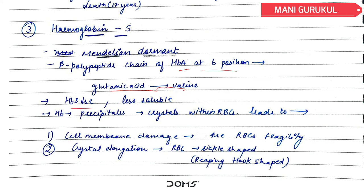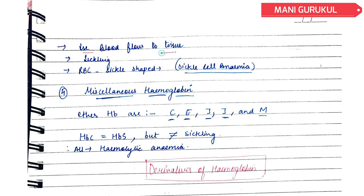When the cell membrane is damaged, RBC fragility increases. RBCs become sickle-shaped or hook-shaped. This causes a decrease in blood flow to tissues because of the sickling shape of RBCs, which may lead to Sickle Cell Anemia.